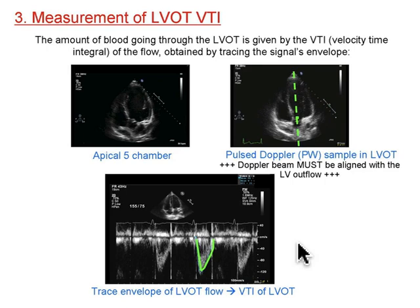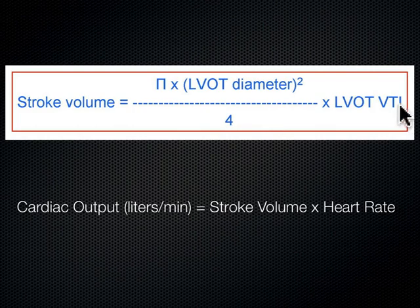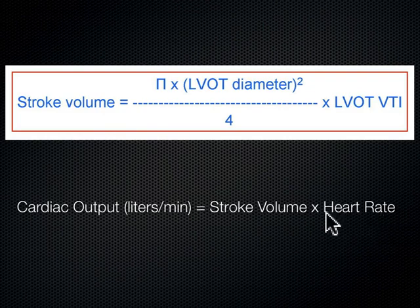To summarize: we measure the LVOT diameter ourselves and give that to the machine. The machine squares it, multiplies by pi, divides by 4 to get the LVOT area, and then multiplies that by the LVOT velocity-time integral — giving us stroke volume. Since the machine is watching the pulsations of the heart, it already knows the heart rate, so it takes that stroke volume, multiplies it by heart rate, and gives you cardiac output.